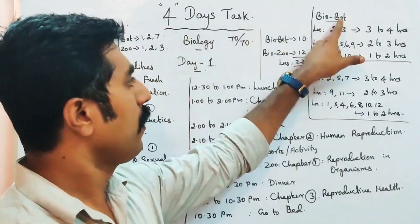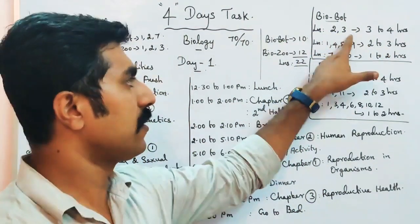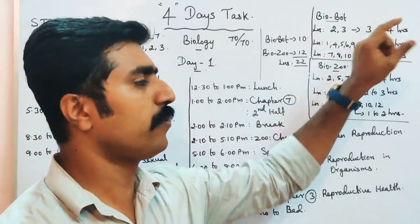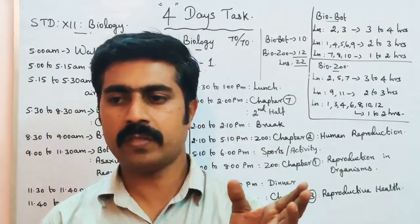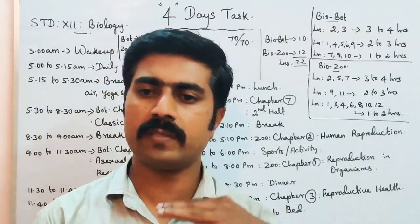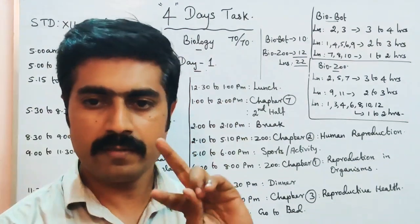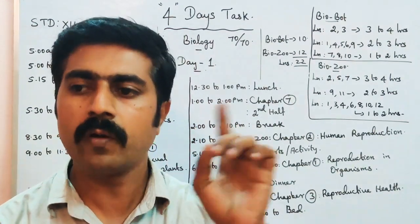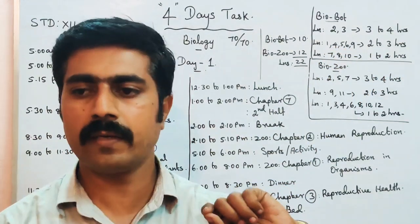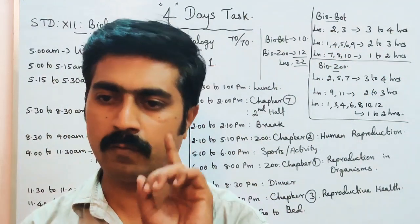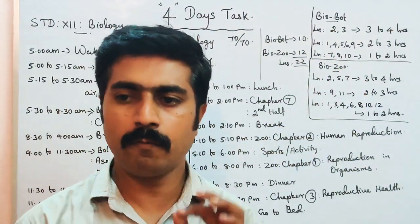For Biobotany timing: Lessons 2 and 3 require a minimum of 3 to 4 hours per class, covering 60-70%. Lessons 1, 4, 5, 6, and 9 require 2 hours per chapter. Lessons 7, 8, and 10 require 1 hour each.